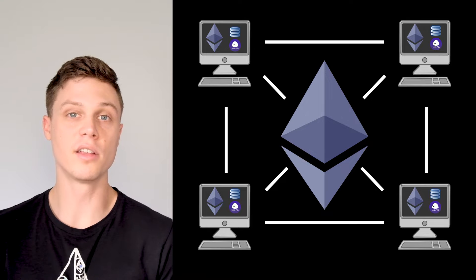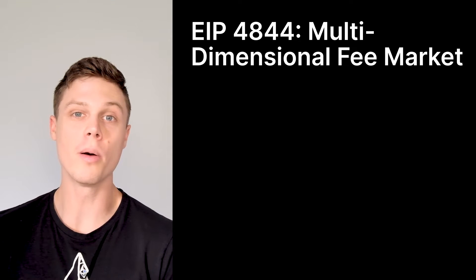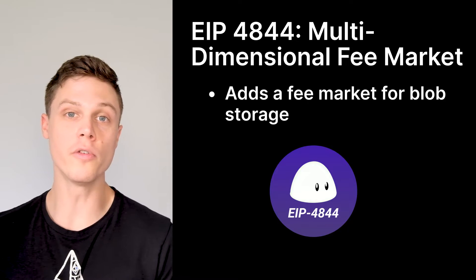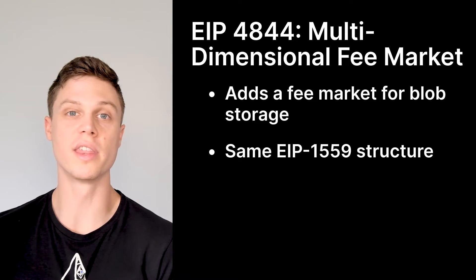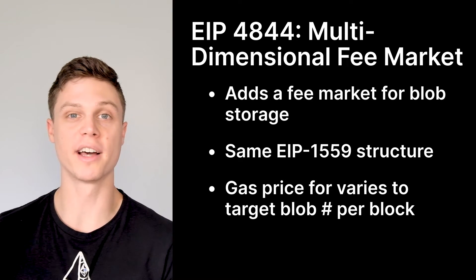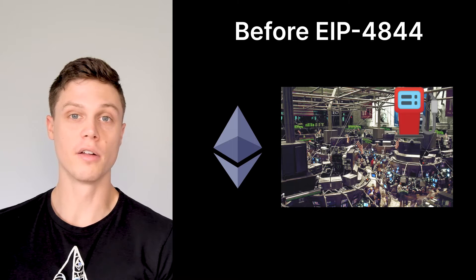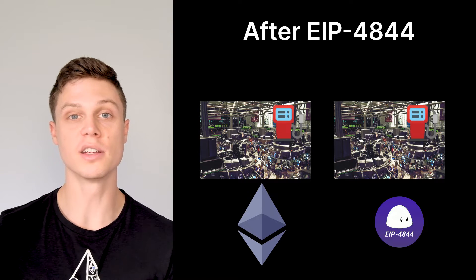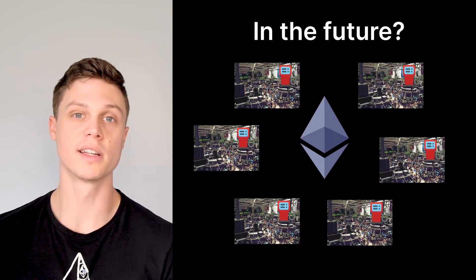This data storage still takes up resources, so it needs to be paid for somehow. But this blob data doesn't necessarily fit into the current Ethereum fee market. This is why EIP 4844 introduces a new multi-dimensional fee market. In addition to the current fee market, there will be a new fee market specifically for these data blobs. This additional fee market will still follow the same structure used with EIP 1559. The fees for storing these blobs are charged in gas, but the actual gas price will adjust up and down to target a certain number of blobs per block. So after this EIP, we'll have two fee markets — one for on-chain data and execution, and one for off-chain blob data — setting the stage for potentially more fee markets in the future.